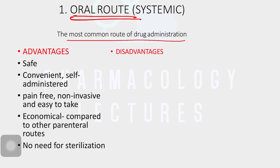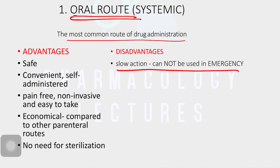But what are the disadvantages of the oral route? It's slow in action and cannot be used in emergencies. If a patient comes in an emergency and you give a tablet, it takes time — it goes into the stomach, gets absorbed, goes to venous circulation, undergoes first pass metabolism, and then reaches systemic circulation. So it takes more time and only a limited fraction reaches the site of action.